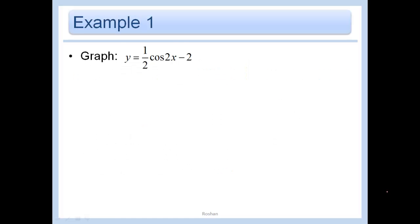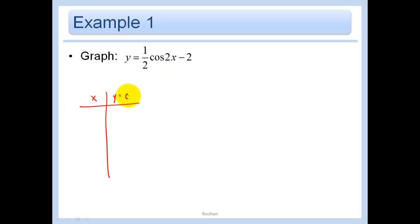So basically, in this case, let's just start with x and then y equals cosine of x, and then we'll apply our transformations.